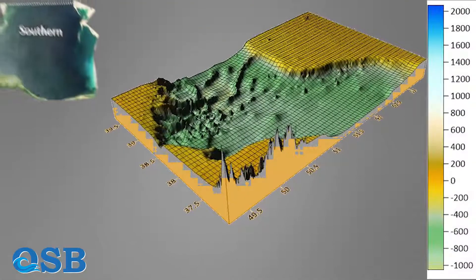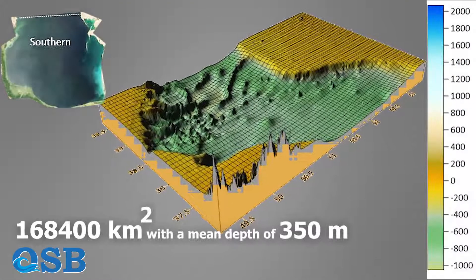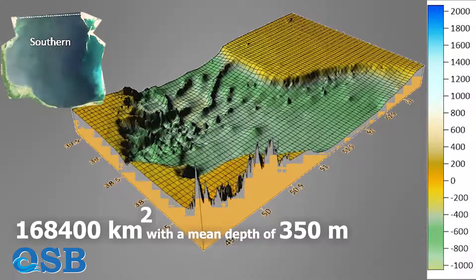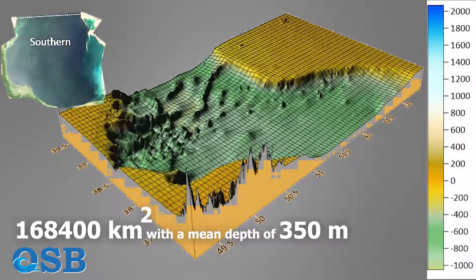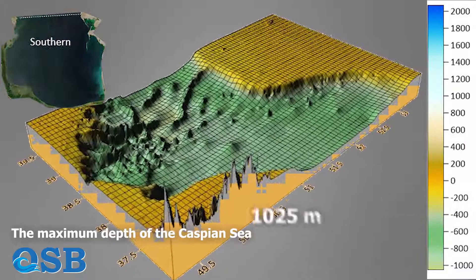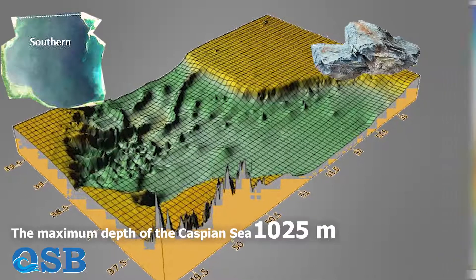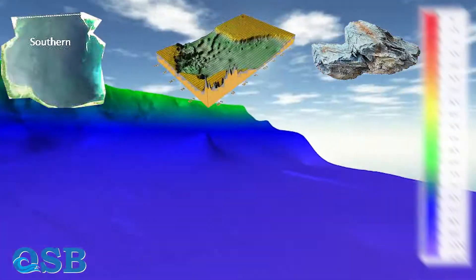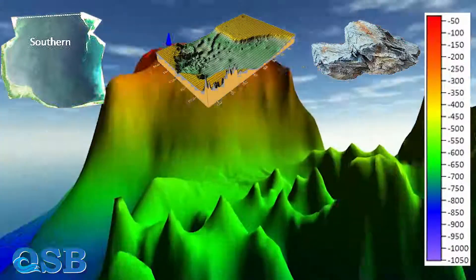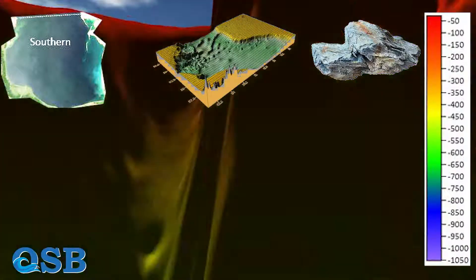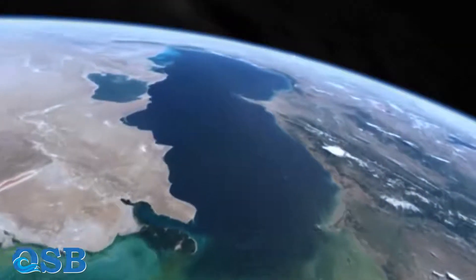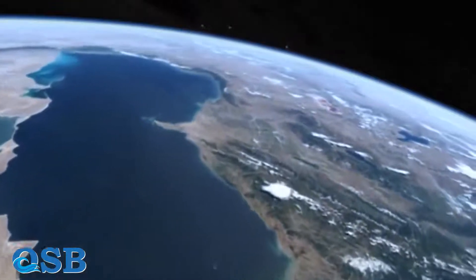In the southern part, near the Iranian coast, the area is 168,400 km² with a mean depth of 350 meters. The maximum depth of the Caspian Sea has been recorded in this part at 1,025 meters. The bed of the southern part consists of basalt, and fine-grained material — notably calcareous silts — is deposited on the shelf in this region. The Caspian Sea has a complex bathymetry map that shows what a long journey it has traveled through history.